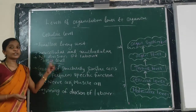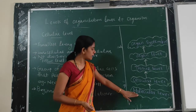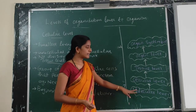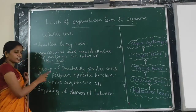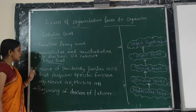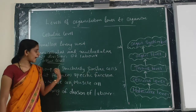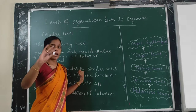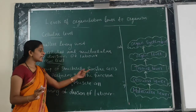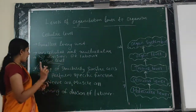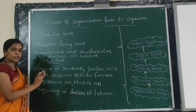Next is the tissue level. The definition of tissue is: tissues are groups of structurally similar cells — similar in external structure such as shape and size — and they perform a specific function. If certain cells are combined but cannot perform a specific function, it cannot be called a tissue.